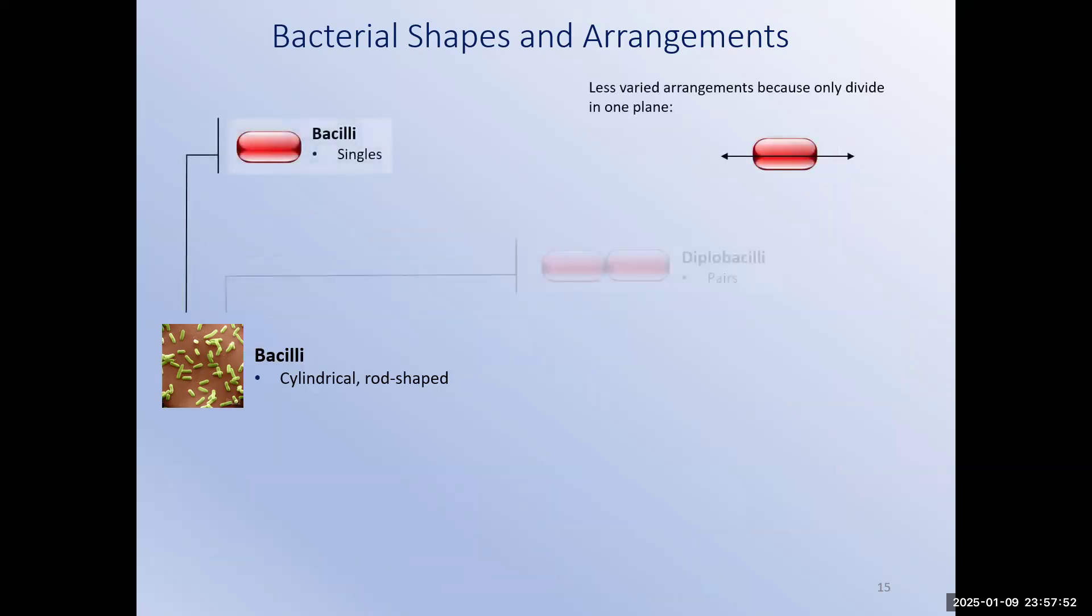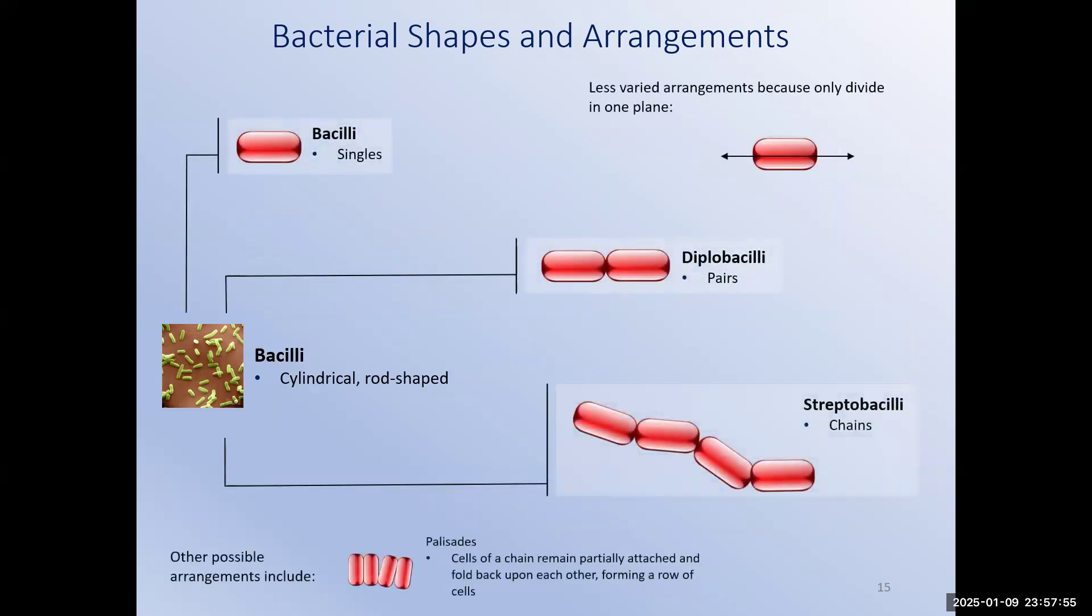Rod-shaped bacteria. These are the bacilli. Less varied arrangements. This is because they only divide in two planes. A single rod-shaped bacteria is a bacillus. If two bacillus stay attached, they form a diplobacilli. Long chains of connected rod-shaped bacteria are streptobacilli. Hopefully, you're noticing a theme here with the naming of the bacterial arrangements. If these long chains fold back on themselves, they form an arrangement known as a palisade. Historically, a palisade was a defensive structure, sort of like a fence around a castle or a fort. So, when bacilli form palisades, they look kind of like little picket fences. Certainly, you want to focus on the singles, the doubles, and the chain arrangements of the rod-shaped bacteria.